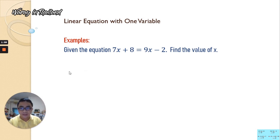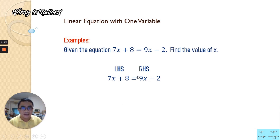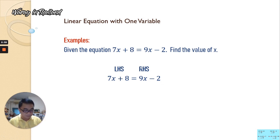So we have the left-hand side and right-hand side. On the left-hand side we have 7x plus 8, and on the right-hand side we have 9x minus 2. Since 9x is greater than 7x, we're going to transpose 7x to the right side so that we will have a positive x. And we're going to transpose the negative 2 to the left side, so it becomes positive 2.